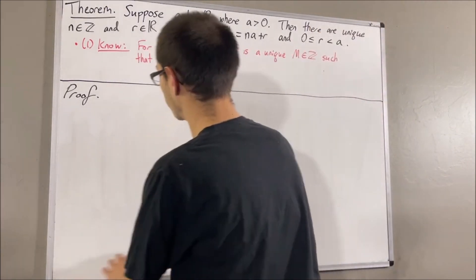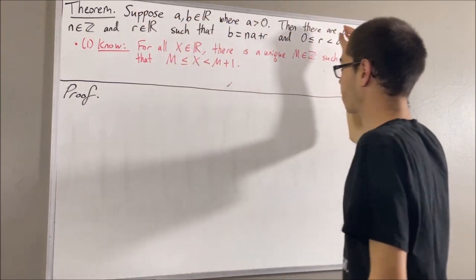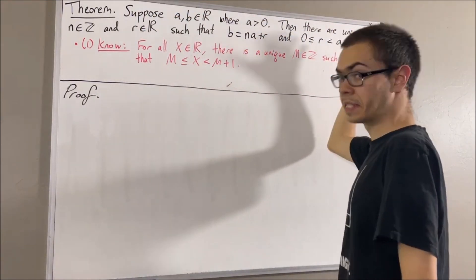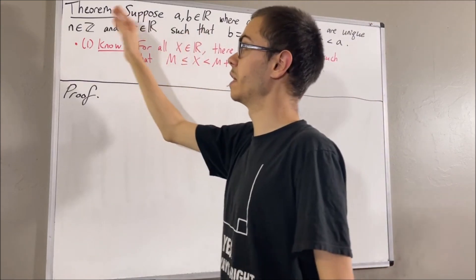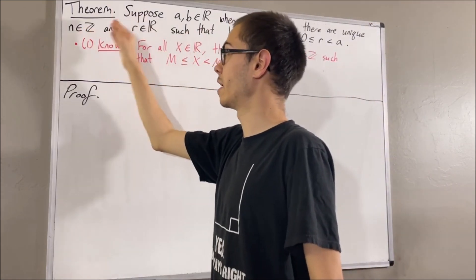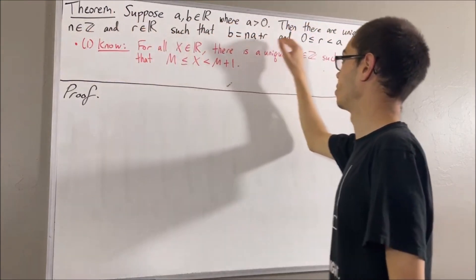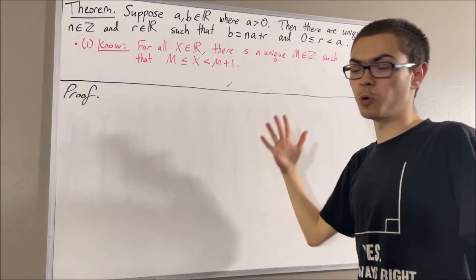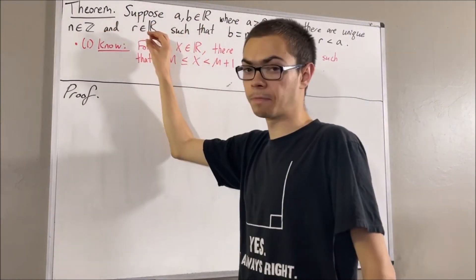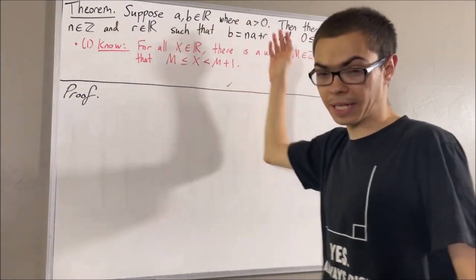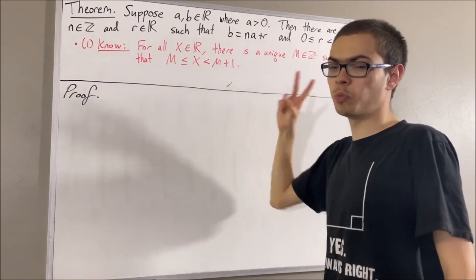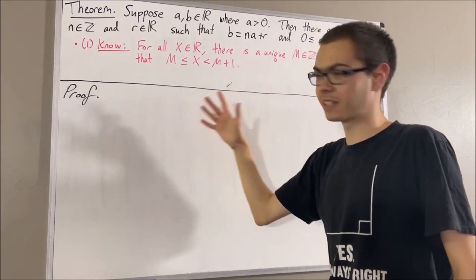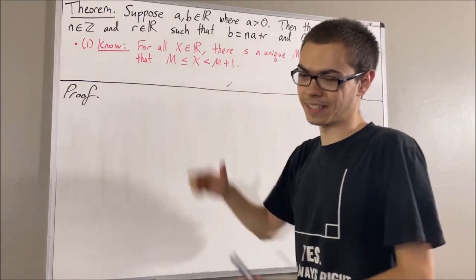Okay, so now let's get into proving this theorem. First, we want to show that there exists a pair of numbers — an integer n and a real number r — that satisfy these two conditions. And then we want to prove that the pair we found is unique. So there are essentially two portions to this proof: existence and uniqueness. Let's start with existence.